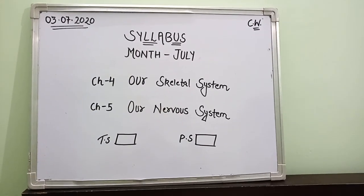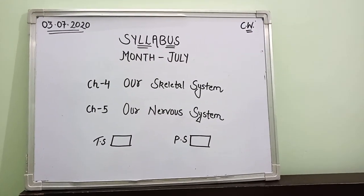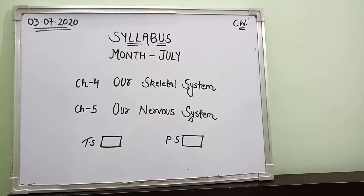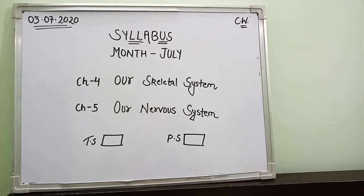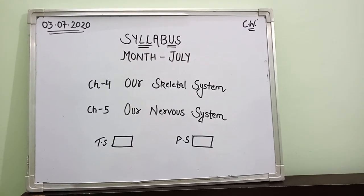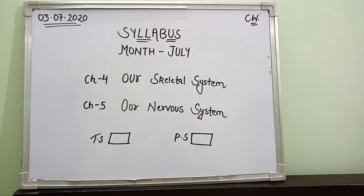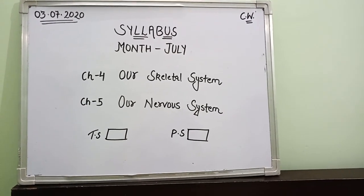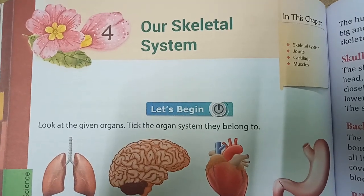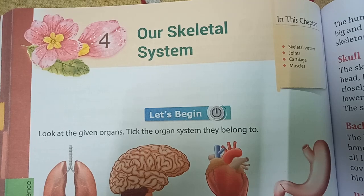Before moving on, let's write down the syllabus for the month of July. Please take out your fair notebook and mention the date, classwork, and syllabus for the month of July — that is Chapter 4: Our Skeletal System, and Chapter 5: Our Nervous System. Both chapters will be covered in the month of July only. Do not forget to make the teacher signature box and parent signature box. I'm going to provide all the syllabus and written work on your school website in PDF form. Let's begin with Chapter 4: Our Skeletal System.